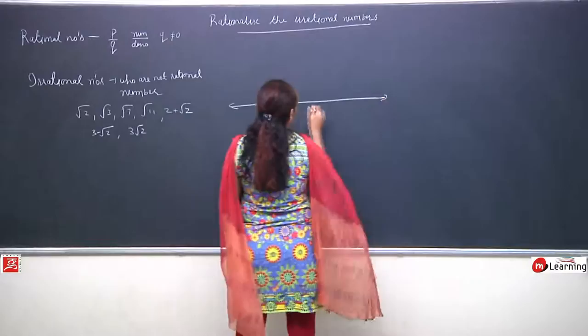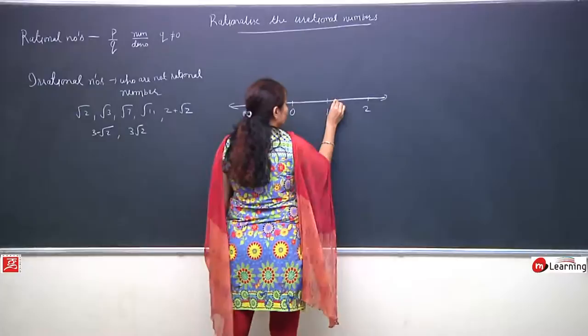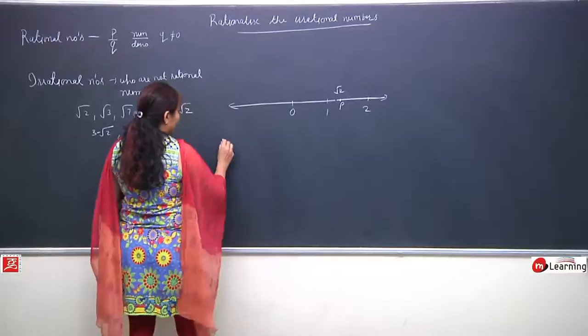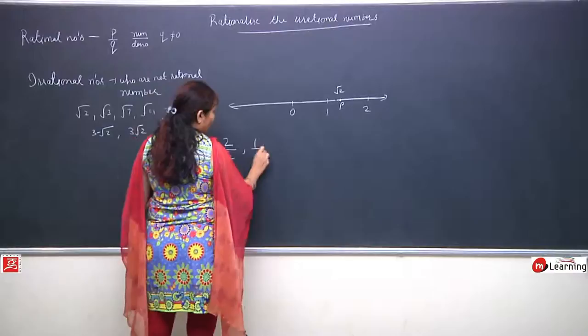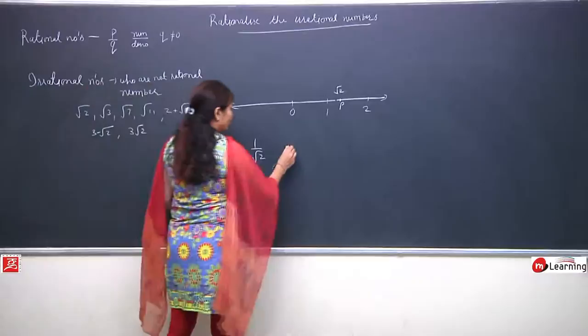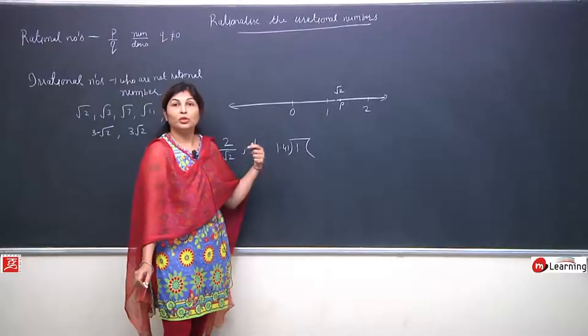For example, if I represent root 2 on a number line between 0, 1, 2 - the value of root 2 is 1.41, so it appears here on the scale. This is our irrational number which is root 2. Now if we have a number like 2 by root 2 or 1 by root 2, we have to divide 1 by 1.41, which gives a very complicated division and a very complicated answer.